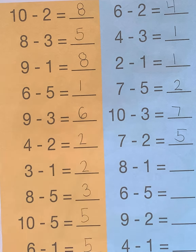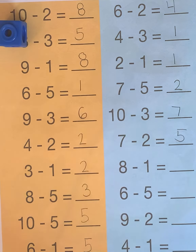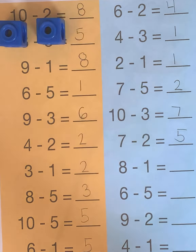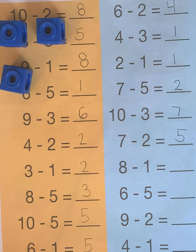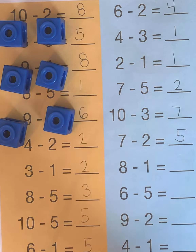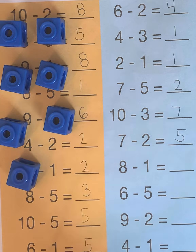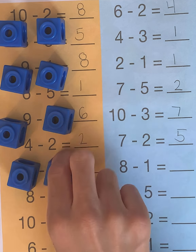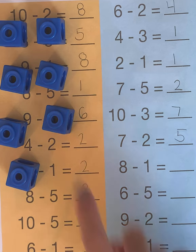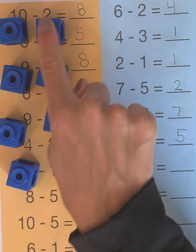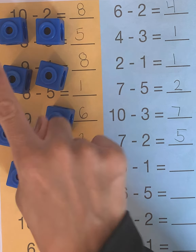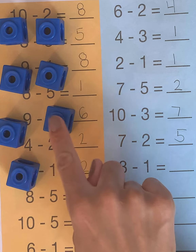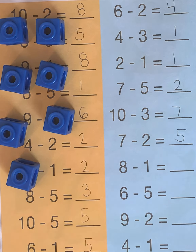8 minus 1. So let's start with 8 cubes: 1, 2, 3, 4, 5, 6, 7, 8. So we are starting with 8 cubes and we are taking just 1 away. How many are left? 1, 2, 3, 4, 5, 6, 7 are left.